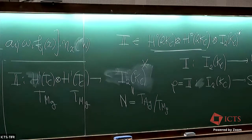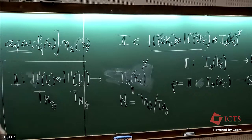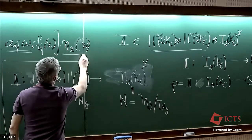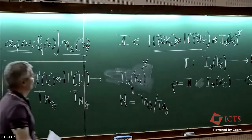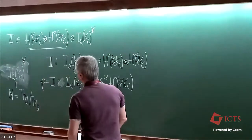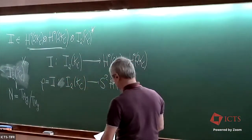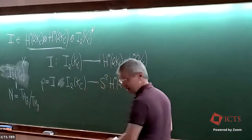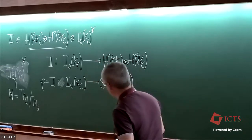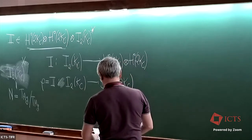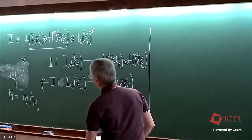Yesterday we arrived at this formula for rho. Here, this is the part that comes from Q, and here there is this extra object which we constructed using the composition of the curve. Now, we would like to see a way to give a possibly more clear meaning to this formula, so let me start with something different.